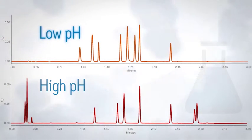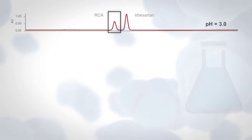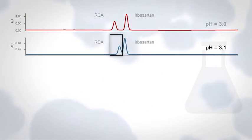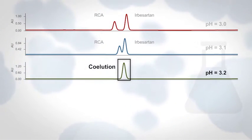However, dramatic changes in selectivity are observed over very small pH ranges. For example, in this reversed phase separation of valsartan and related compounds, changing the pH using Auto Blend Plus in 0.1 unit increments results in a reversal of peak elution order.